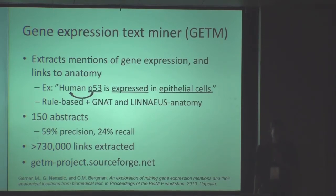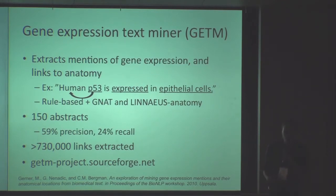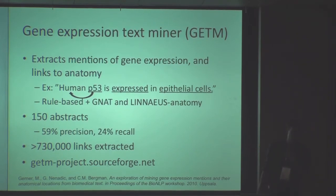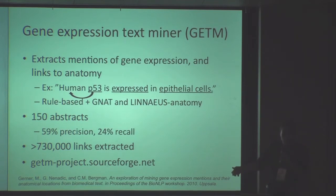The system recognizes that the author is talking about the expression of a gene in a specific location. This is useful for people who want to know about the expression of genes or what's going on in anatomical locations. While data from biological experiments exists, for people who want specific links to literature that actually discuss a particular gene-anatomy expression relationship, nothing like this really existed previously. So if somebody wants to find an article that talks about the expression of P53 in epithelial cells, they can use the system to get those resources.